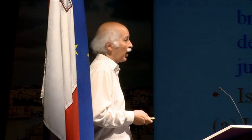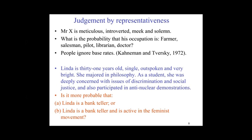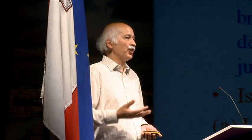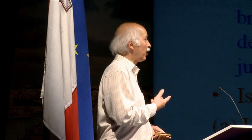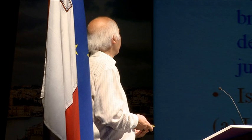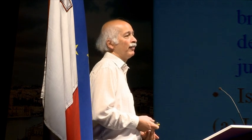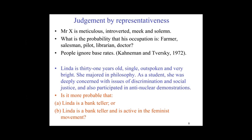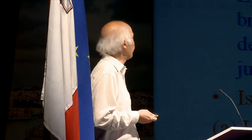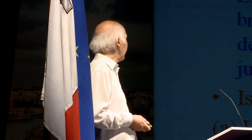One method of trying to quantify your opinion is representativeness: you ask what's the probability that person A belongs to category B by trying to see how similar they are, and you assess your probability on that similarity. The well-known example is where person X is described as meticulous, introverted, meek, and solemn — and you ask what occupation they have from a list: farmer, salesman, pirate, librarian, and doctor. People's eyes light up at 'librarian' because it matches the stereotype, ignoring the fact that before any description, the chance the person is a salesman is enormous because there are so many more salesmen than librarians.